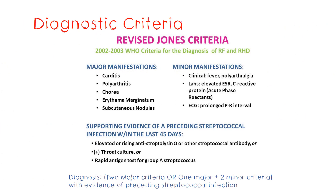Since there are no diagnostic investigations for rheumatic fever, we use a set of criteria known as the revised Jones criteria to diagnose the condition. The revised Jones criteria are of two types: major criteria, which are the typical and somewhat specific findings in rheumatic fever, and minor criteria, which are non-specific but assist in diagnosis. The major criteria are the five signs and symptoms we learned before. The minor criteria are fever, joint pain, elevated ESR and CRP, and ECG changes — specifically a prolonged PR interval.